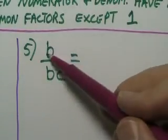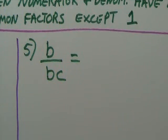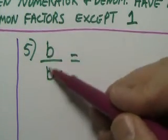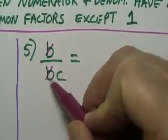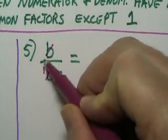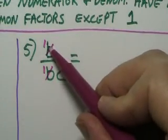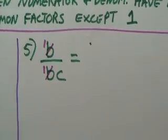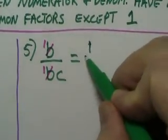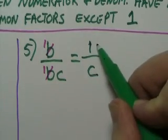Number five: we have b over bc. Let's see what they have in common on top and bottom. B will go into both of these once and once, and that's all I can do. So what I have left on the top is just a one, and on the bottom I have one times c, which is just the letter c.